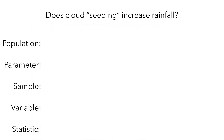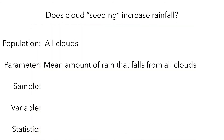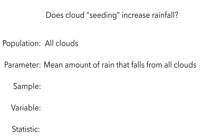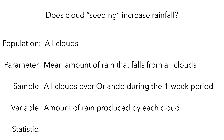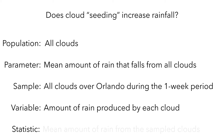In this scenario, the population would be all clouds, and the parameter would be the mean amount of rain that falls from all clouds. The sample would be all clouds over Orlando during the one-week period of the study. The researchers measured the amount of rain produced by each cloud and computed the mean, or average, amount of rain from the sample clouds.